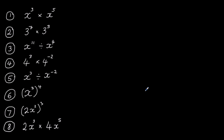Here's a set of questions — pause the video and try them out, then I'll go through the answers. The first one: following the rule of when we multiply we add the powers, the base stays the same, 3 plus 5 makes 8. Second one: the base stays as 3, and 7 add 3 makes 10. Third one: when we divide we subtract the powers, base stays the same, 11 take away 4 makes 7.